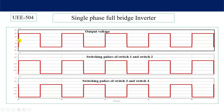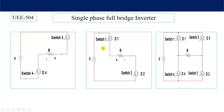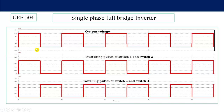Looking at the waveform, we can see the positive output voltage and the negative output voltage. When switch numbers 1 and 2 are on, we get positive output voltage. When 1 and 2 are off and 3 and 4 are on, we get negative output voltage. So the current direction reverses, making the polarity reverse, giving us negative output voltage. Now let's compare this with the single-phase half-bridge inverter.